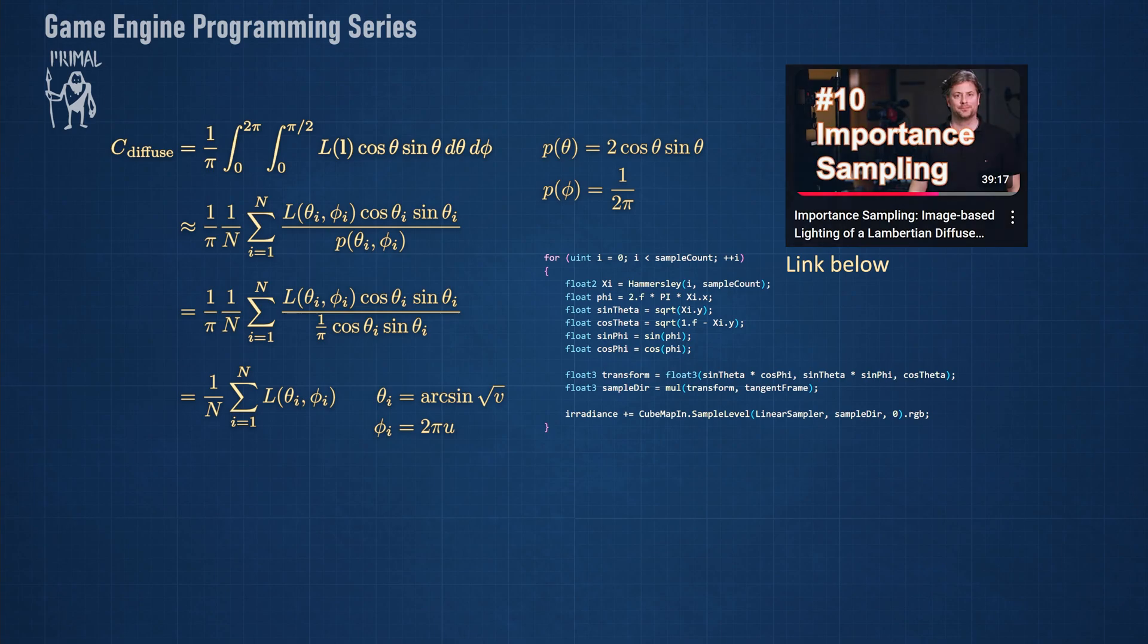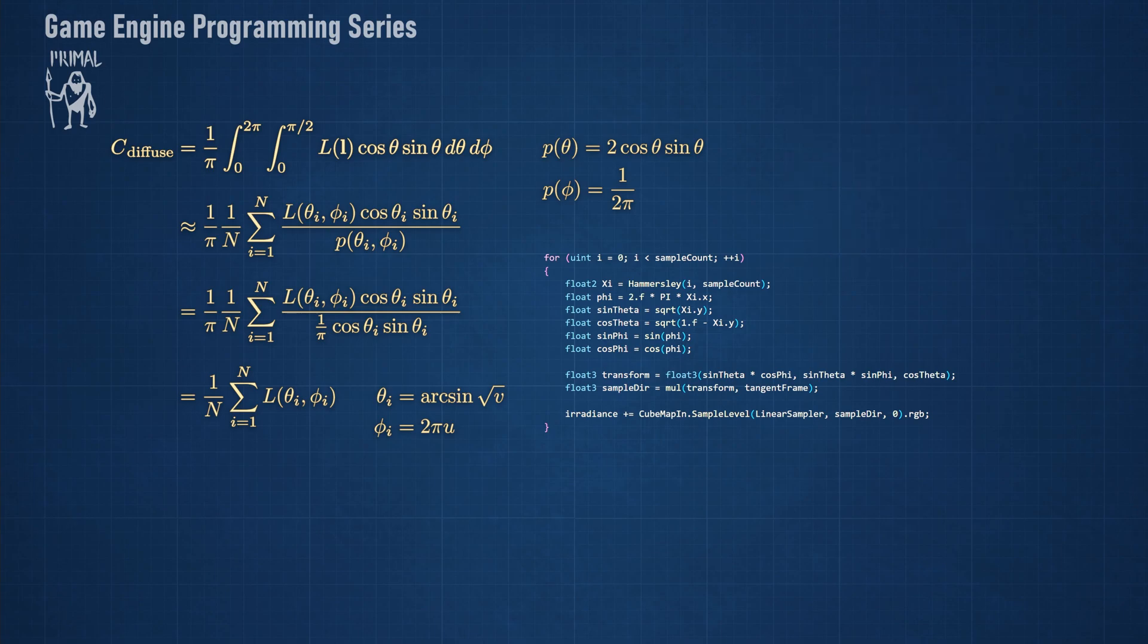The next step is to perform the same pre-filtering for the specular component, which involves evaluating this integral for the Cook-Torrance specular BRDF. In the next video, I'm going to discuss how we can apply importance sampling to estimate this integral.